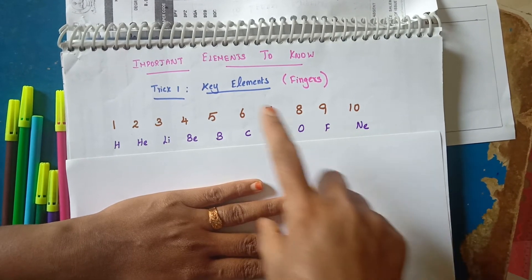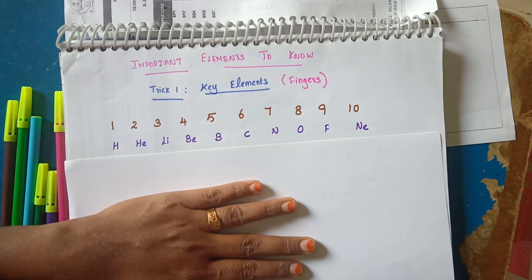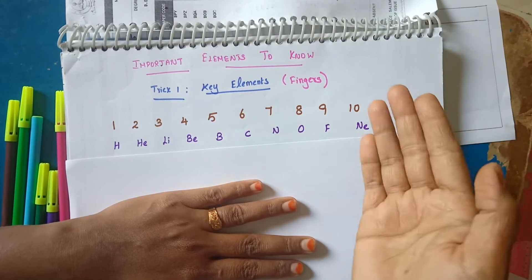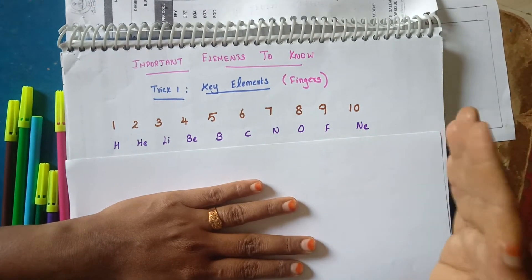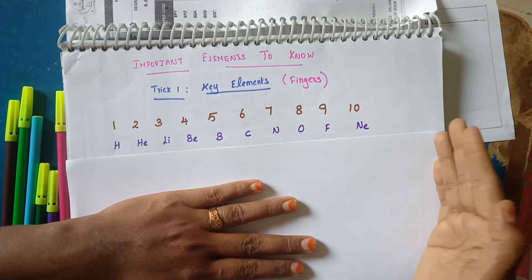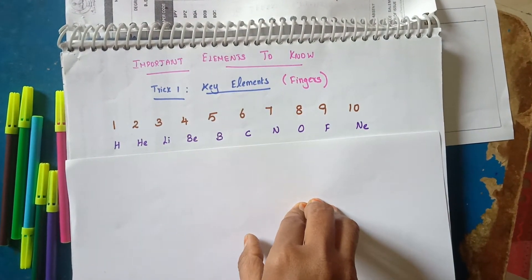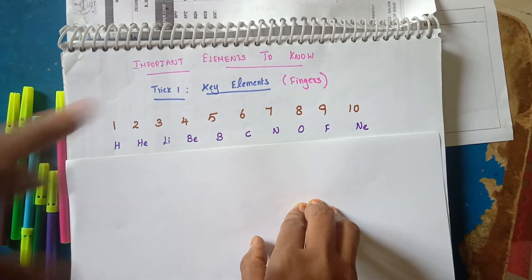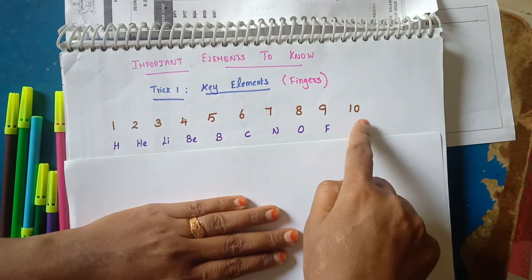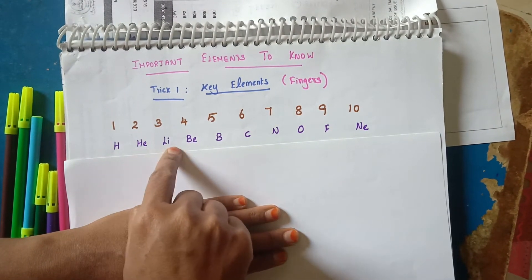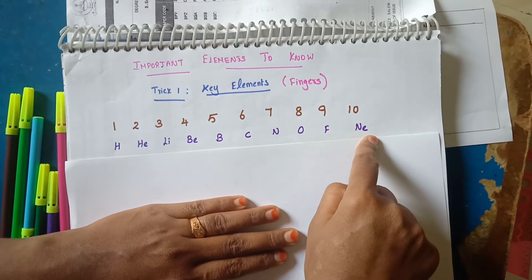You have to do the periodic table. There are Hydrogen, Helium, Lithium, Beryllium — you may be confused. If you are going to study the first or initial elements, it will be very easy. Hydrogen, Helium, Lithium, Beryllium, Boron, Carbon, Nitrogen, Oxygen, Fluorine.